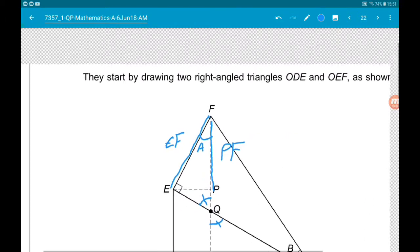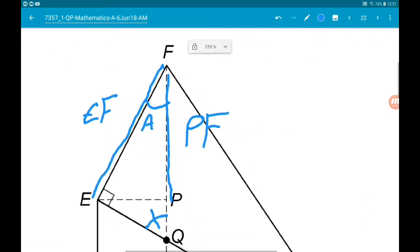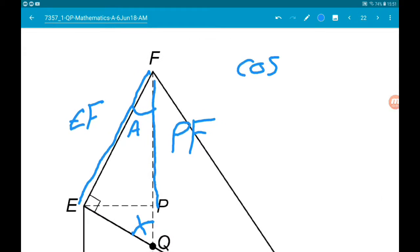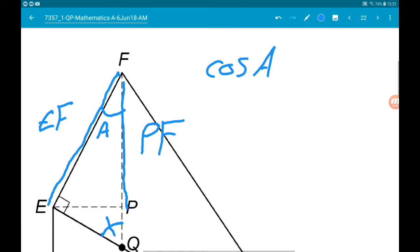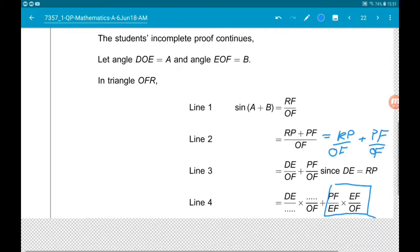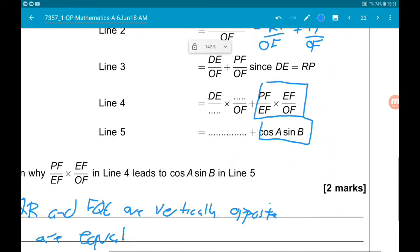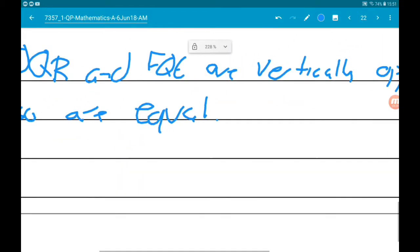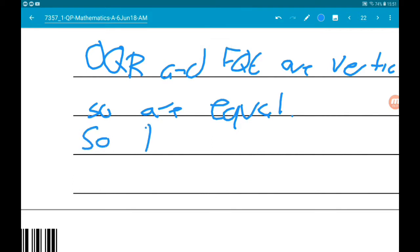Now, cos of A is equal to the adjacent, so PF, over the hypotenuse EF. So we can say that PF over EF, so PF over EF is equal to cos of A.